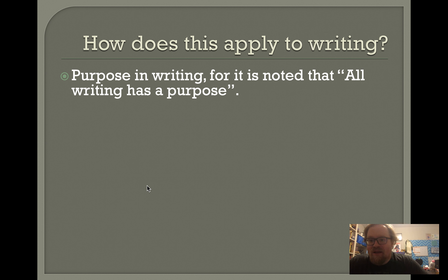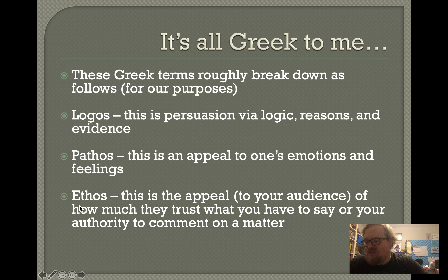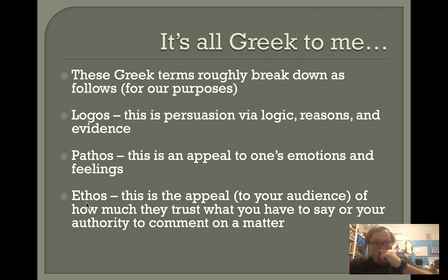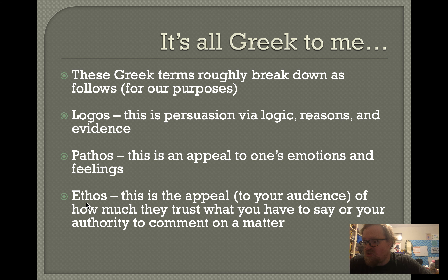How does this all apply to writing? These appeals have a real effect when it comes to writing. Ethos is something you'll build in writing through knowing what you're talking about, following the assignments, and using research when we get to those assignments. And along the way, depending on the assignment, you're going to communicate through logic, reasons, and evidence, and you're going to use emotional appeals. The emotional appeal will be something you'll probably use a bit more of, and that will often depend on the assignment itself.